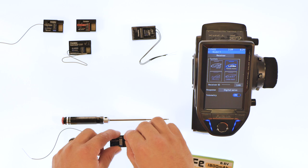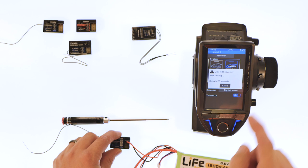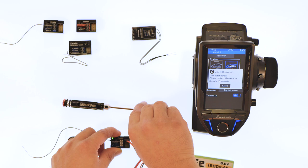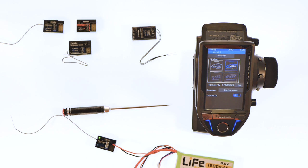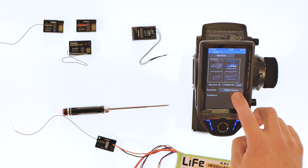And then on this you'll want to hit telemetry. You'll hit link. You have 20 seconds to link it. Once it links it'll give you this message. You just hit close. You're ready to go. That's how simple it is to link that with your receiver. You're able to also turn telemetry on and off here as well.